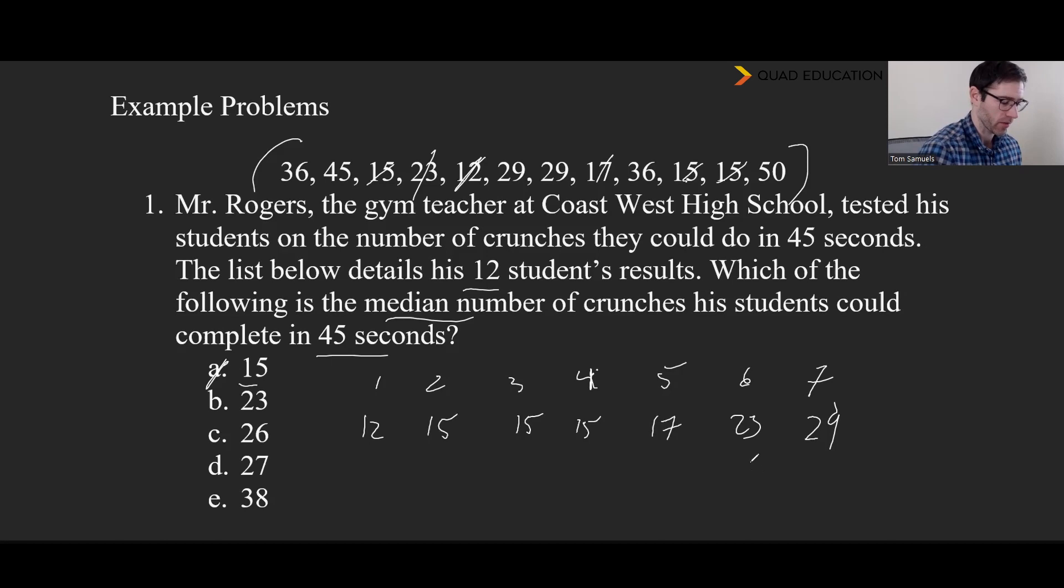Okay, and so we need to find the average of 23 and 29. 23 plus 29 is 52. And 52 divided by 2 is 26. And so that's our median.